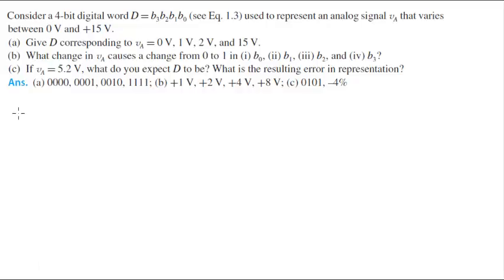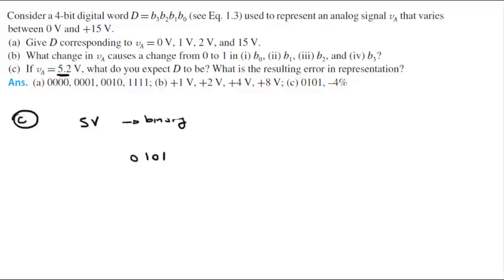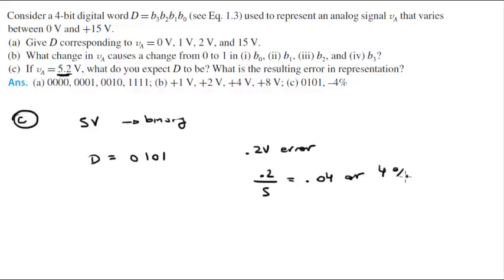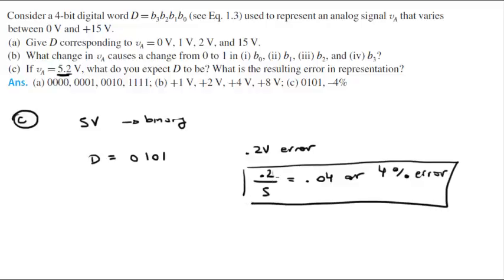Let's move to the last part, Part C. If VA is 5.2 volts, what do you expect D to be, and what is the resultant error? Well, 5.2 is approximately 5 volts, so we convert 5 to binary: 0,1,0,1. So D would be 0101. However, there is 0.2 volts of error. To calculate the error: 0.2 divided by 5 equals 0.04, or 4% error.